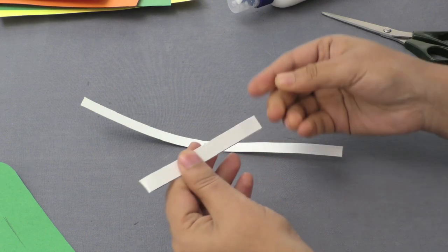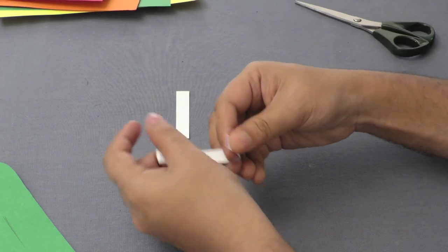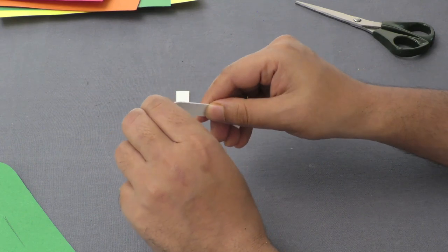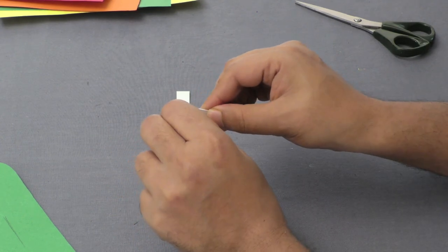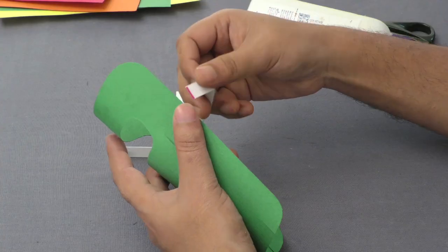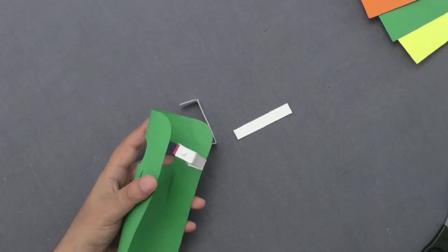Fold these chart paper pieces to make the shape of brackets. Now, attach these brackets to the plane's body for support.